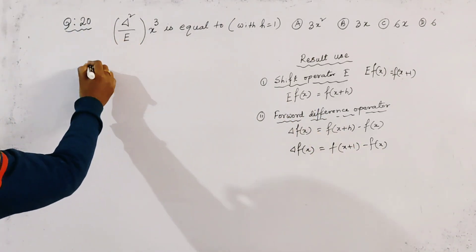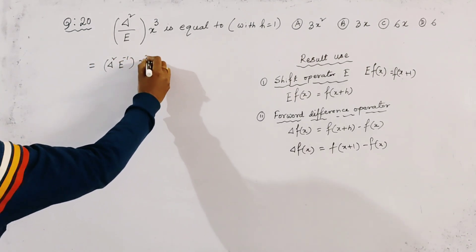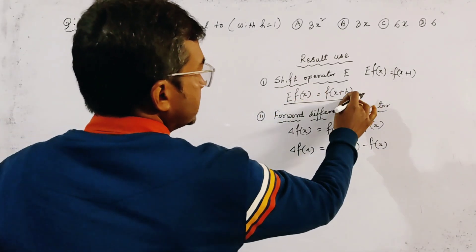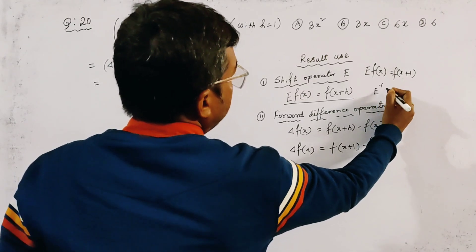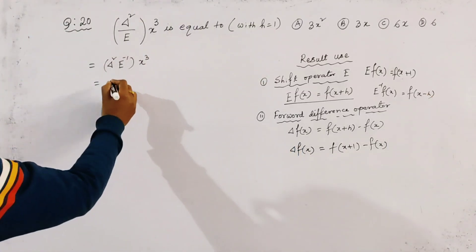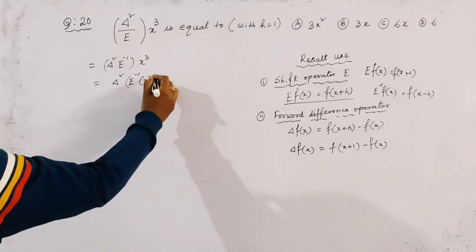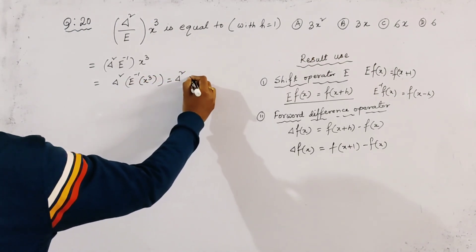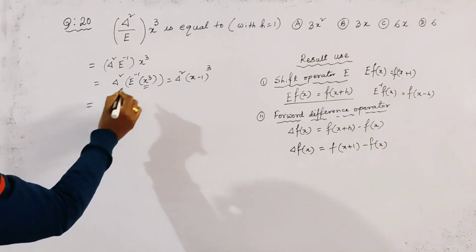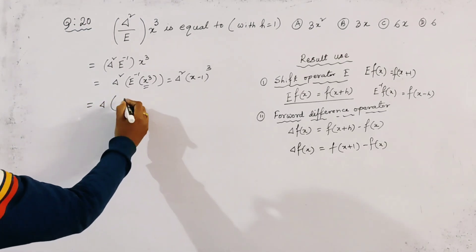We write the expression as Δ² E⁻¹ x³. Since E of f(x) equals f(x+h), then E⁻¹ of f(x) equals f(x-h). So we rewrite Δ² E⁻¹ x³ as Δ² of (x-1)³, because f(x) equals x³.